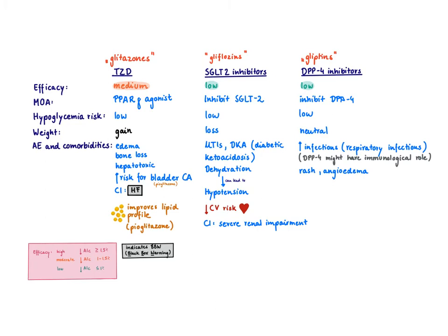Now, the last two classes I want to discuss are gliflozins, the SGLT2 inhibitors. They act at the kidney and inhibit the reabsorption of glucose. You just get rid of more glucose. The hypoglycemia risk is low. They also lead to weight loss, which you can think about easily - you're just going to pee out more glucose, so you get rid of more calories.